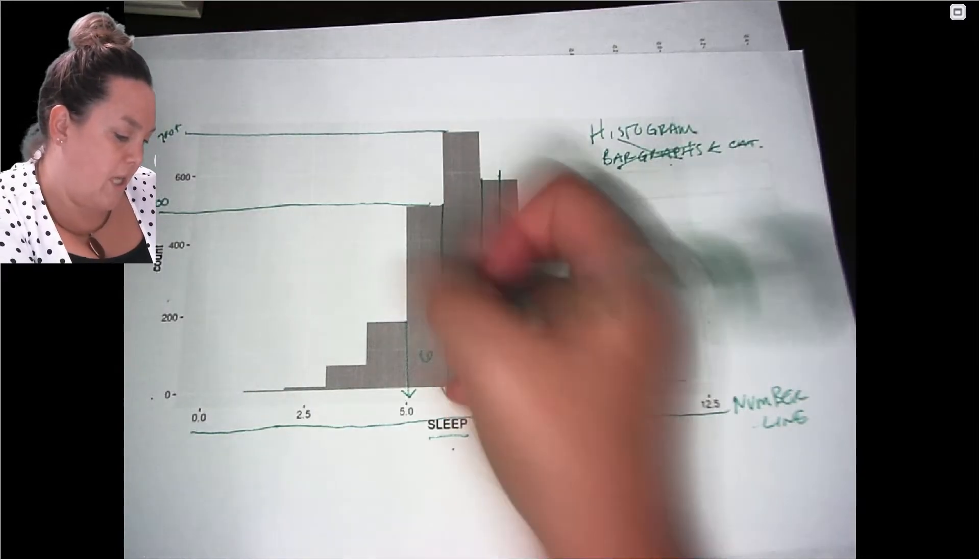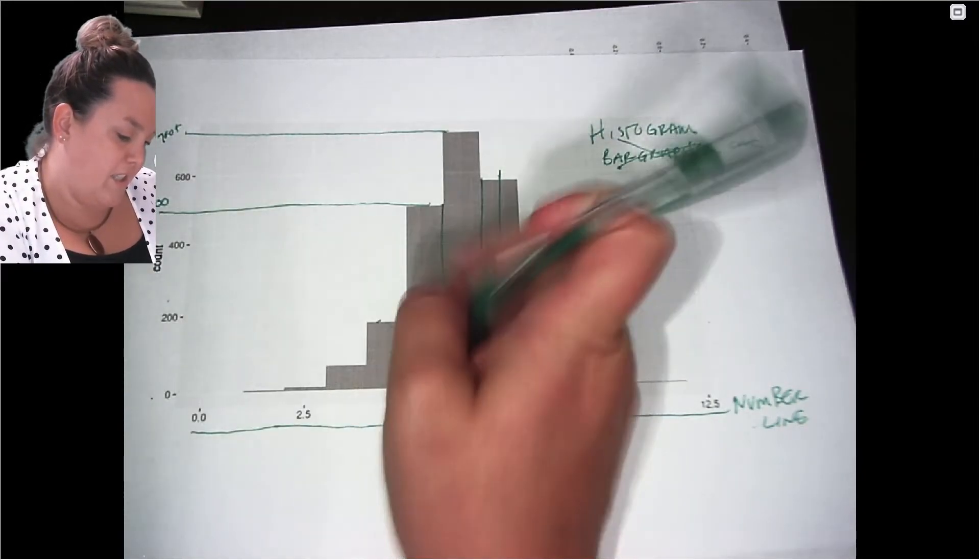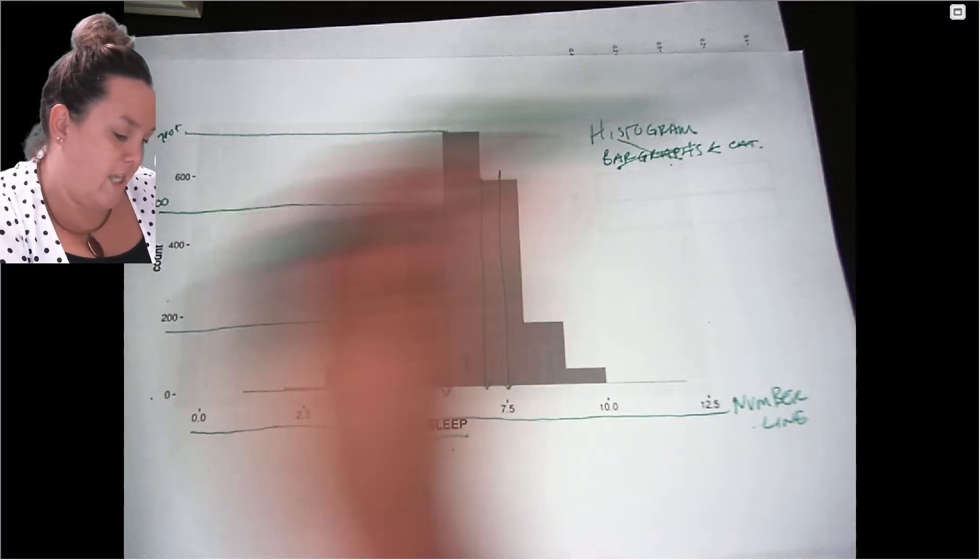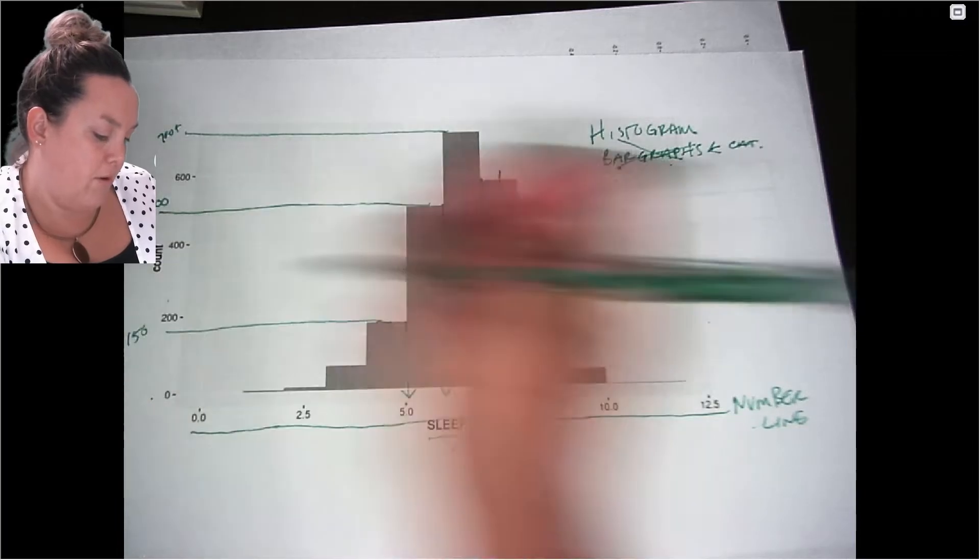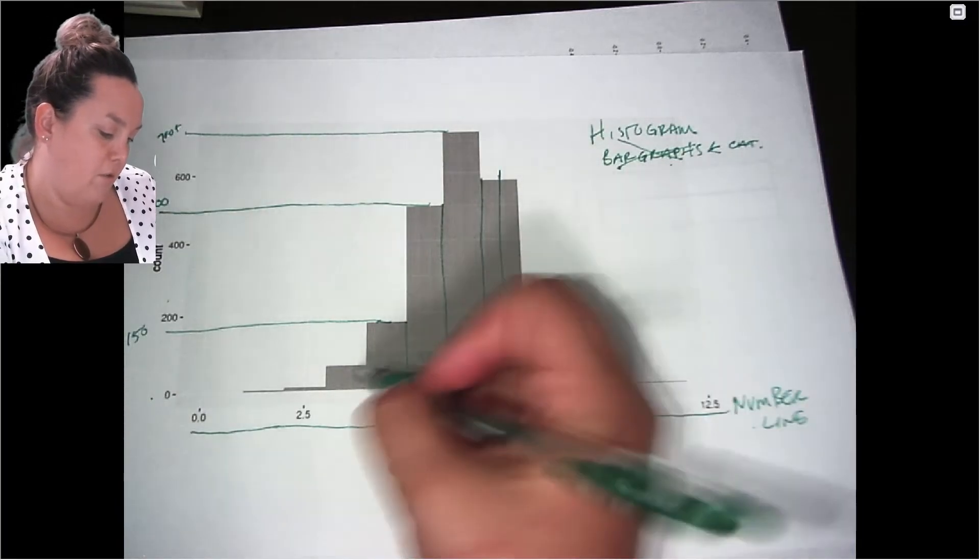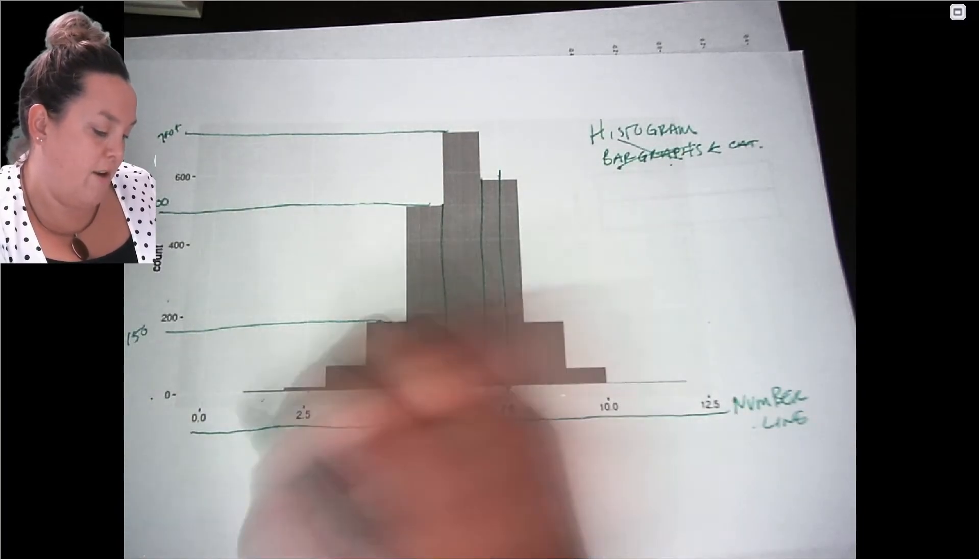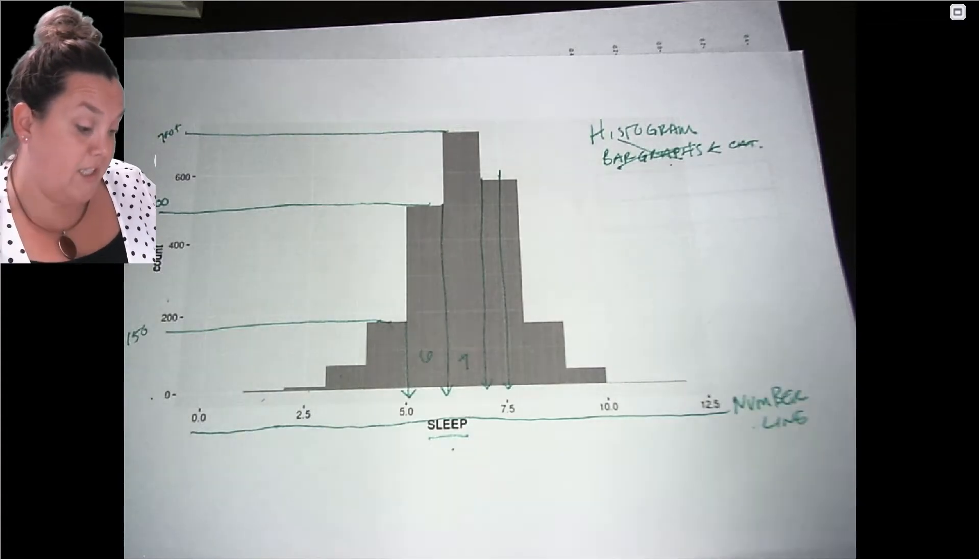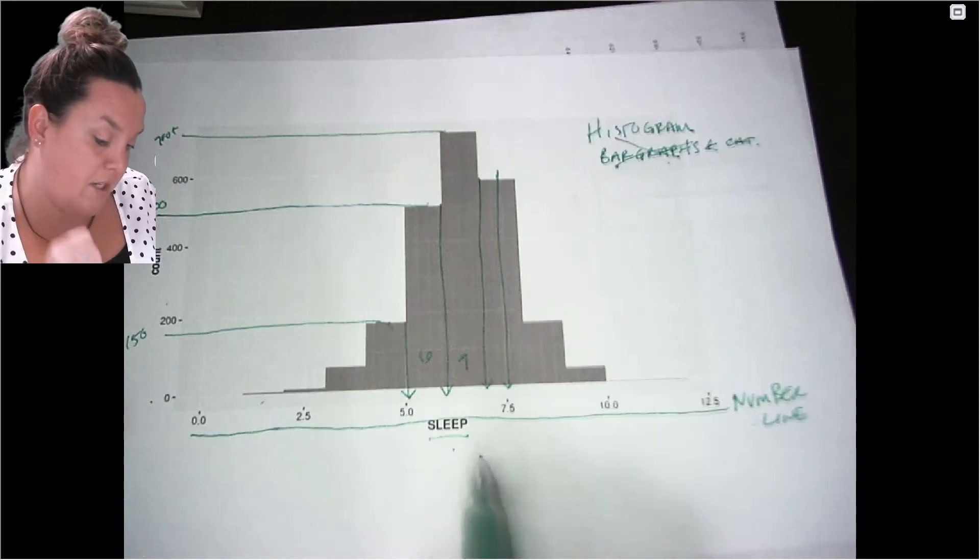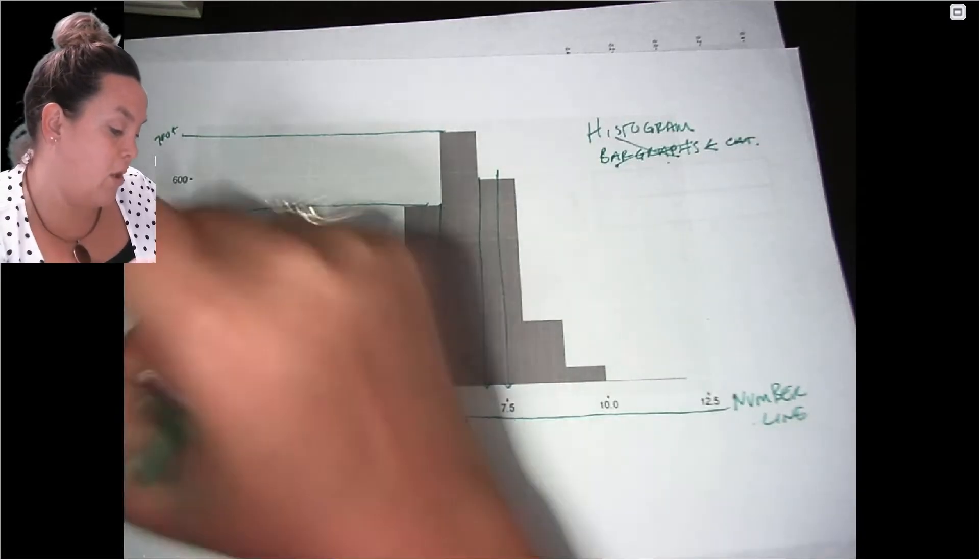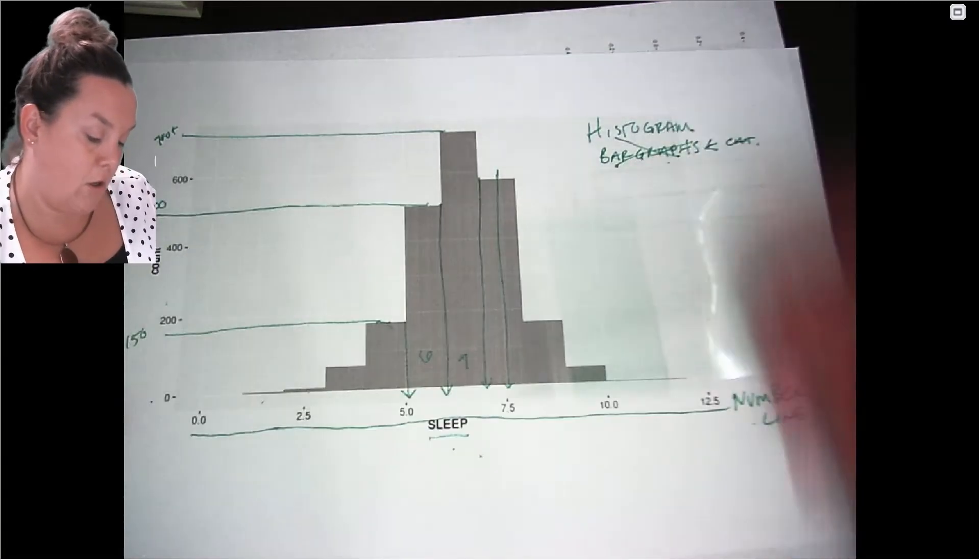And here since that's the five cutoff, I'd say it's about a hundred and fifty people that sleep less than five hours, plus whatever you have in here, so maybe two hundred. So with the histogram you have the quantitative variable on the x-axis and then you have how many individuals are in each bar.